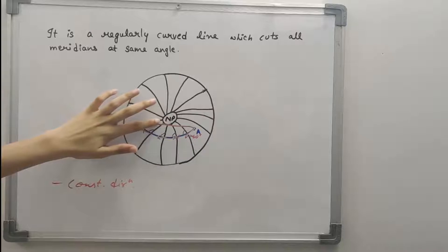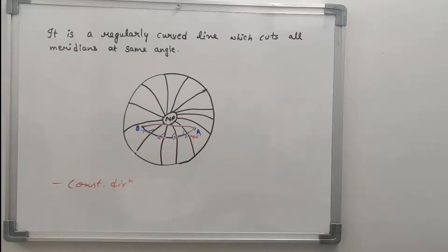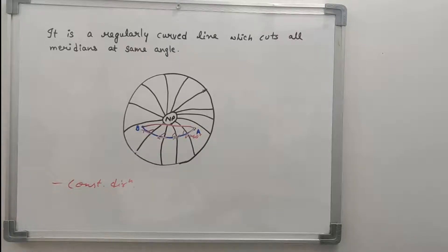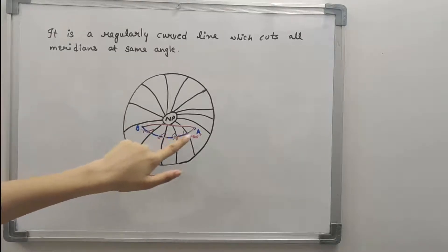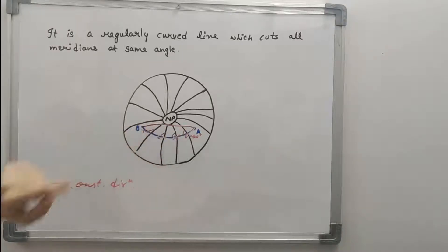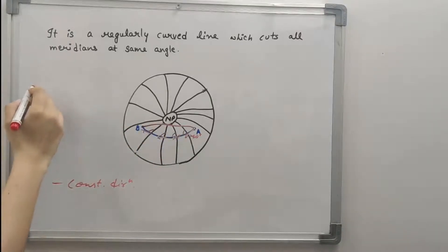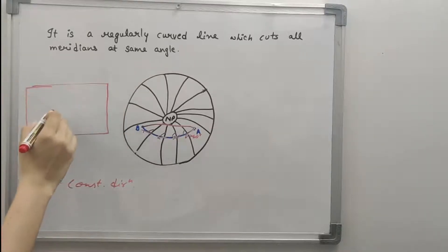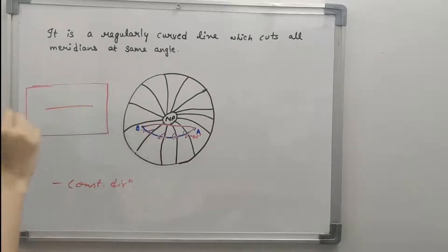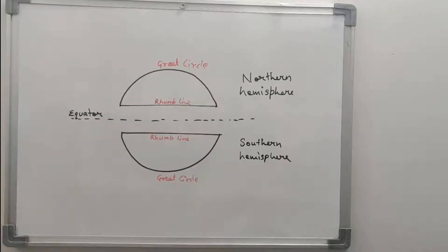A rhumb line is convex to the equator and concave to the nearer pole. Some examples of rhumb lines are parallels of latitude, because a parallel of latitude cuts all the meridians at 90 degrees. The equator is a special case — it is both a great circle and a rhumb line. Meridians are also rhumb lines, as the cut angle is 0 degrees. On a globe, the rhumb line is a curved line and the great circle is almost straight, but on a Mercator projection chart the situation is reversed — the rhumb line is straight and the great circle is curved.